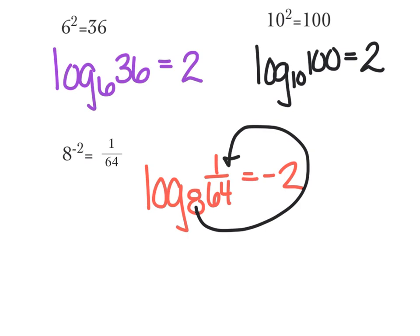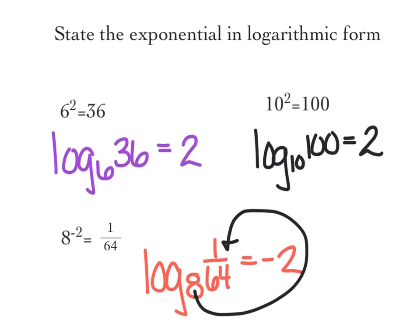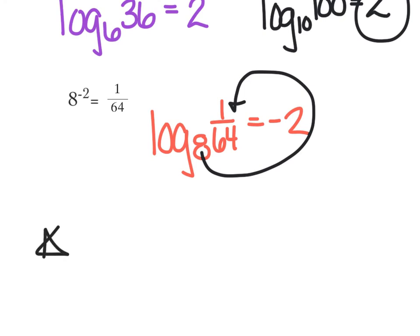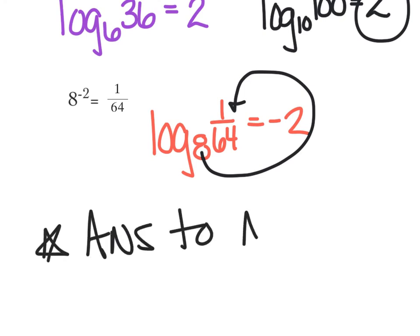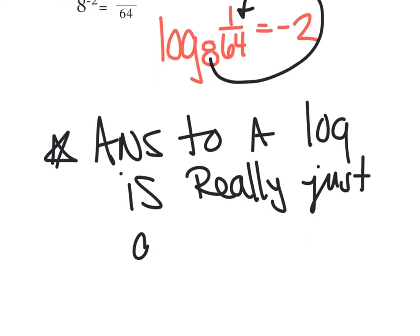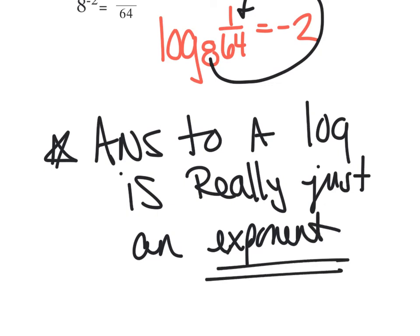One thing we hope you really get out of this is: the answer to a log is just an exponent. Take a look — log base 6 of 36, the answer is 2, which is really just the exponent. Again, the answer is 2, which is really just the exponent. The answer to a log is really just an exponent. That's probably worth writing down: the answer to a log is really just an exponent. That's all a logarithm is — it's just an exponent.